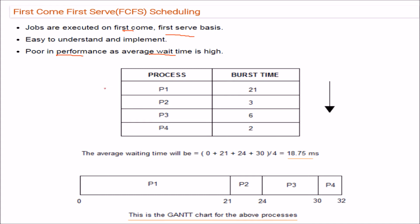For example, if we have processes P1 to P4 with burst times, this is the Gantt chart. P1 comes first, starts at 0, and runs until time 21 because it needs 21 CPU cycles. After that, P2 is served from 21 to 24 — it has a burst time of 3 cycles.